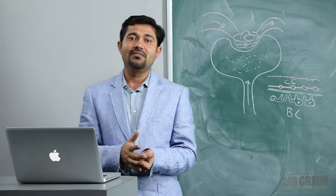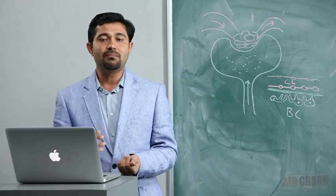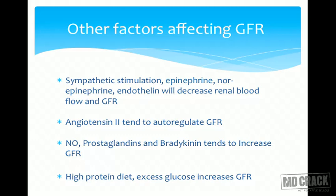Angiotensin II is a very important hormone whenever there is a severe decrease in blood volume. Certain vasodilators such as nitric oxide, prostaglandins, and bradykinin tend to increase GFR. High protein diet and excess glucose will also increase GFR.